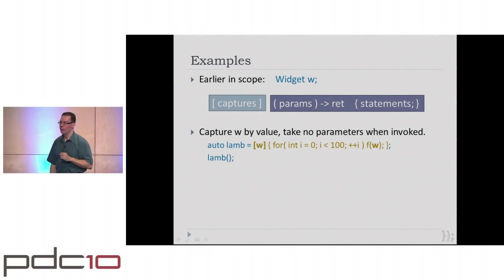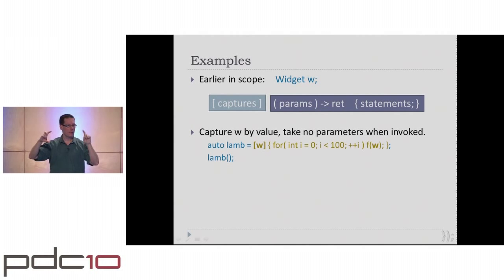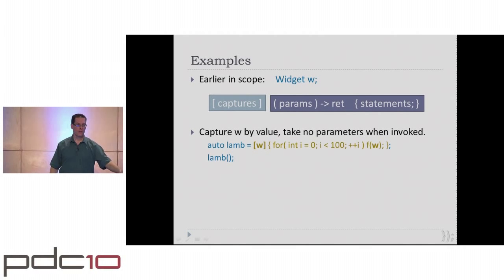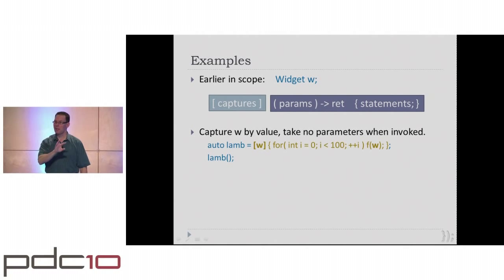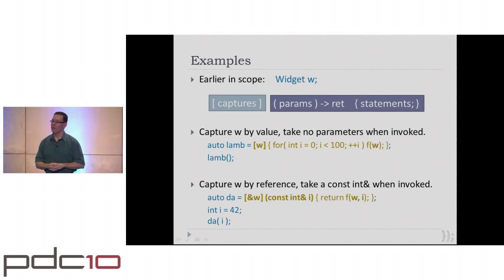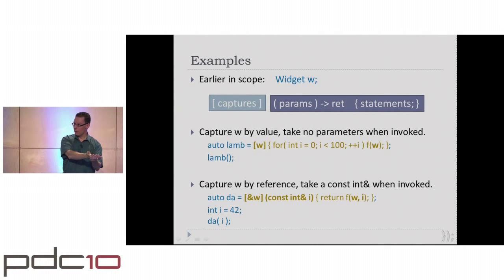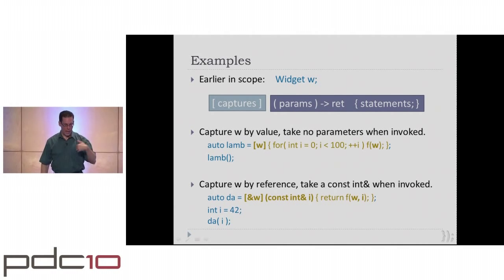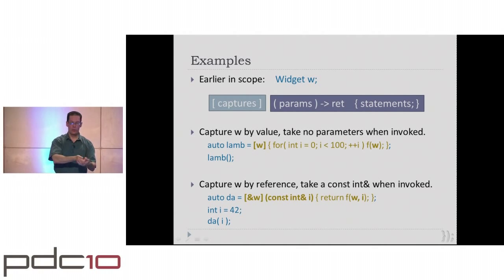When you actually use this, say you've got a widget object in scope and you want to write a lambda that captures this widget by value — you put W in the capture list. Then you write whatever code you want using W. You capture it in an 'auto' variable — you don't have to say the whole type — and then invoke it like a function. If you want capture by reference instead, just put an ampersand in front of W.